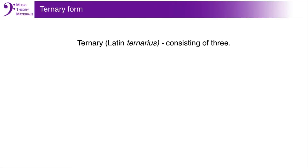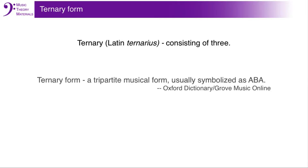In this video we will talk about ternary form. The word ternary comes from the Latin ternarius, meaning consisting of three. The Oxford Dictionary, Grove Music Online, defines ternary form as a tripartite musical form, usually symbolized as ABA.